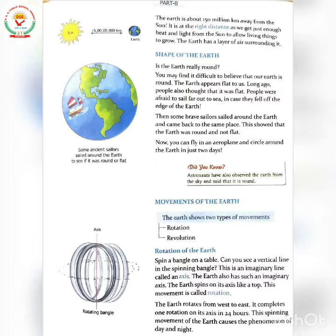Next — movement of the Earth. The Earth shows two types of movements: rotation and revolution. First, rotation of the Earth — spin a bangle on a table. Can you see a vertical line in the spinning bangle? This is an imaginary line called an axis. The Earth also has such an imaginary axis, and this movement is called rotation.